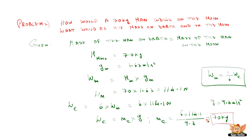We proved that the mass of the man on earth is 70 kg, which is also equal to the mass on the moon — 70 kg. By using the relationship between weight on earth and weight on the moon we can find the mass, but it is a given fact that mass does not change, so it is the same everywhere.